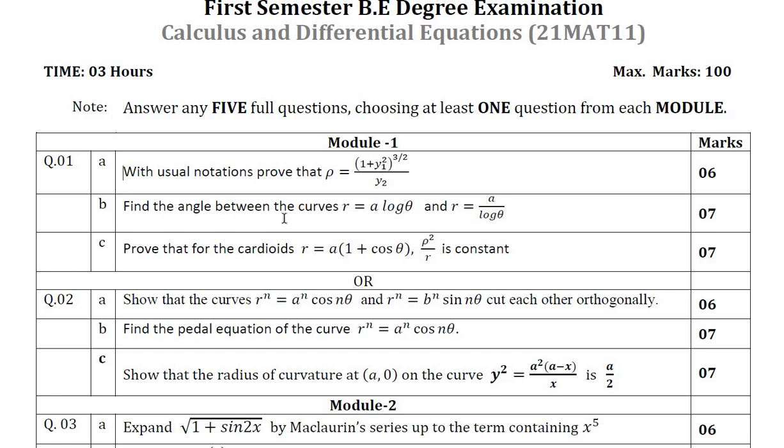Question number 1B is angle between radius vector and tangent, angle between two curves. This is a compulsory question that will be there, angle between two curves. Again question number 1C is finding radius of curvature of the given cardioid ρ² = a²/r where a is a constant. Question number 2A consists of again two curves that are intersecting each other orthogonally. Question number 2B contains pedal equation with curve r^n = a^n cos θ. This is very important in radius of curvature form. I think you came to know how to analyze the question, how to choose the question and how to answer module 1.